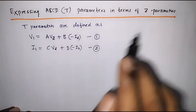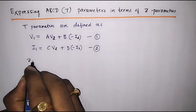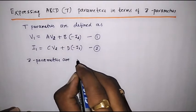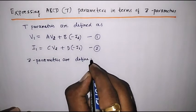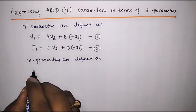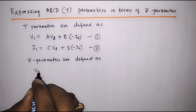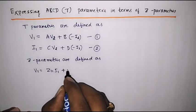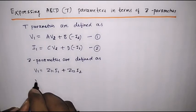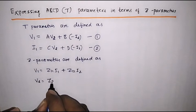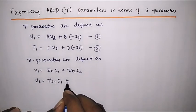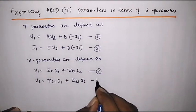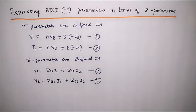Now let us define the Z parameters. Z parameters are defined as: V1 is equal to Z11·I1 plus Z12·I2, and V2 is equal to Z21·I1 plus Z22·I2. We will call these equation number three and equation number four.